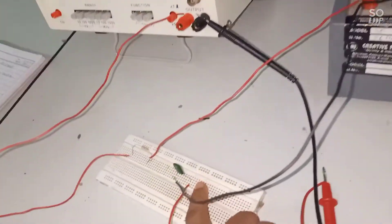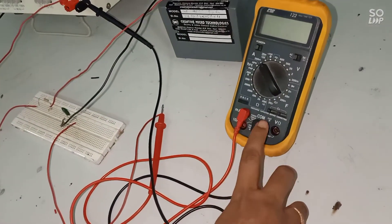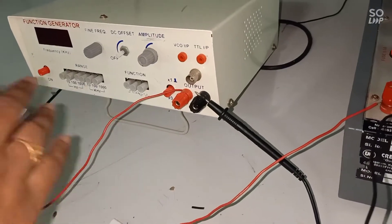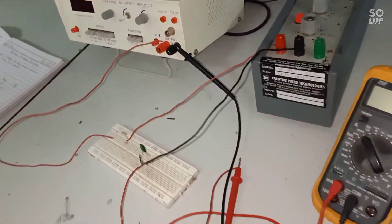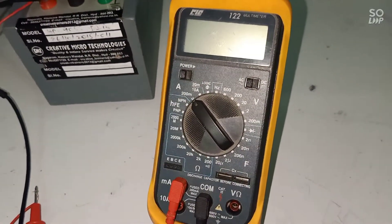The second end of the capacitor is connected to positive of the ammeter and the negative of the ammeter is connected to the negative of the supply of function generator. Here the ammeter range is kept as 200 milli amperes.